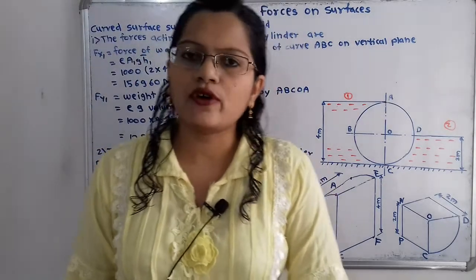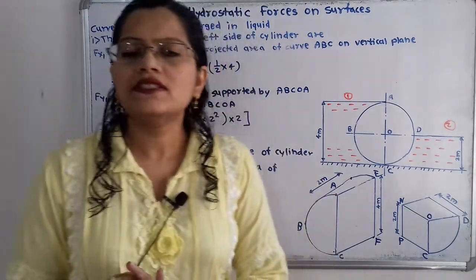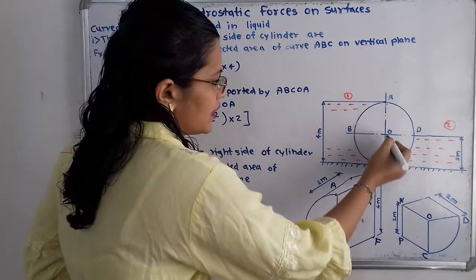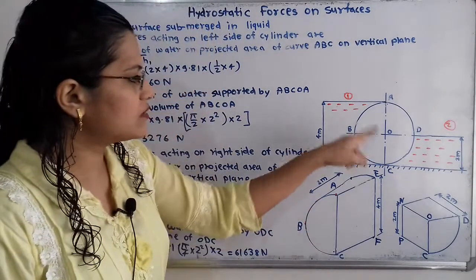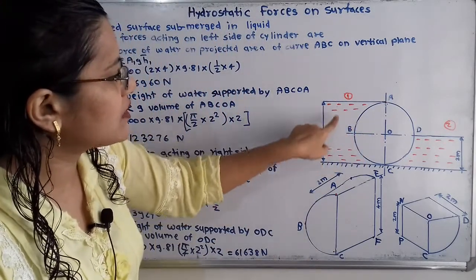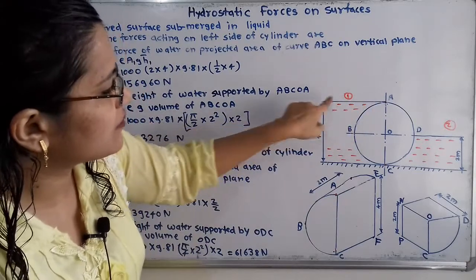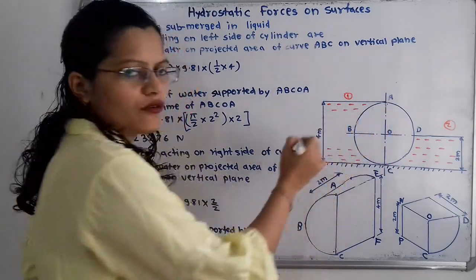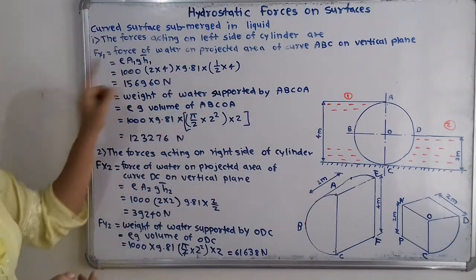The formula for this force is rho × G × A × H-bar, where H-bar is the distance of the center of gravity from the free surface of water. For the curve ABC, the center of gravity is at the midpoint, which is at a distance of 4 divided by 2 = 2 meters from the free surface. So H1-bar equals 2 meters.